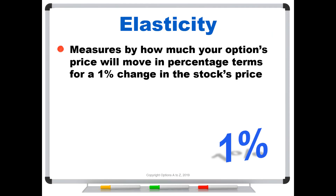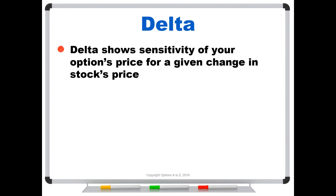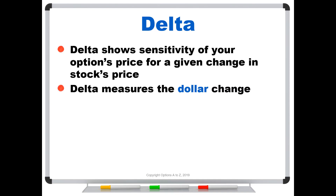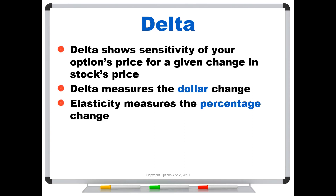An option's elasticity measures by how much your option's price will move in percentage terms for a 1% change in the stock's price. You might be thinking this sounds an awful lot like delta. And it's similar, but delta shows the sensitivity of your option's price for a given change in the stock's price — in other words, delta measures the dollar change. Elasticity, on the other hand, measures the percentage change.